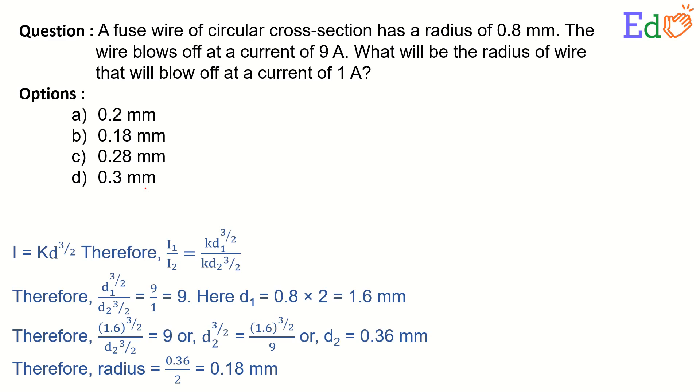Here, we are having the cross-section given 0.8 mm. The wire blows off at a current of 9 Ampere. Now, we have to find out if the current is 1 Ampere, then what will be the radius? We know there is a formula: current I equals to K, constant K into D to the 3 by 2.